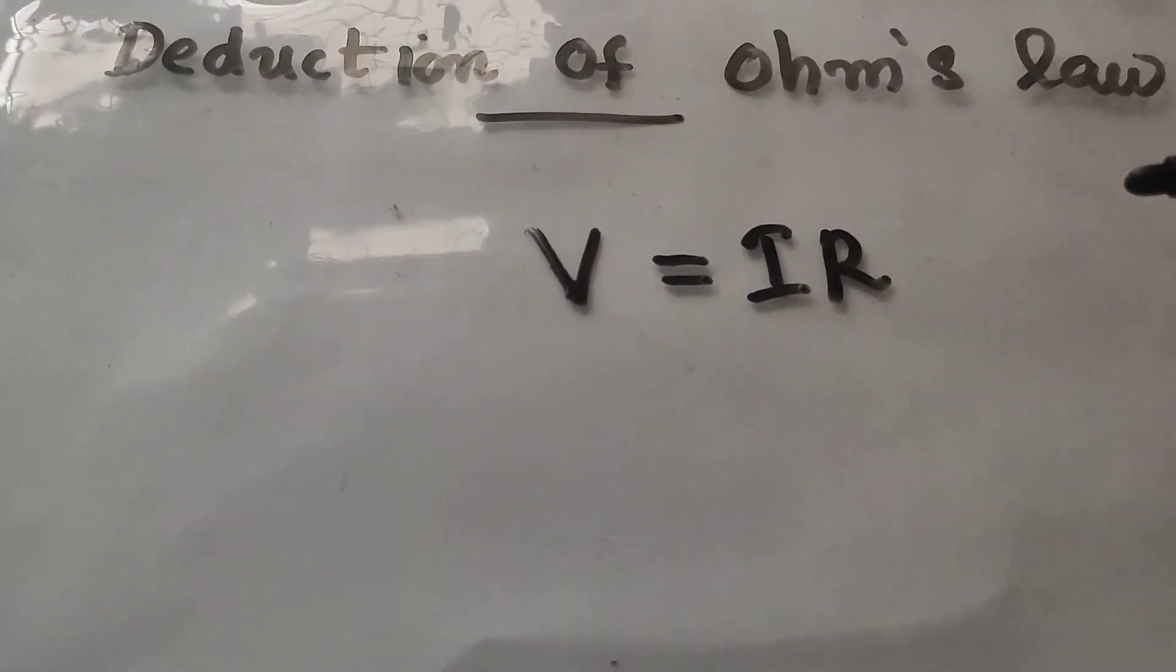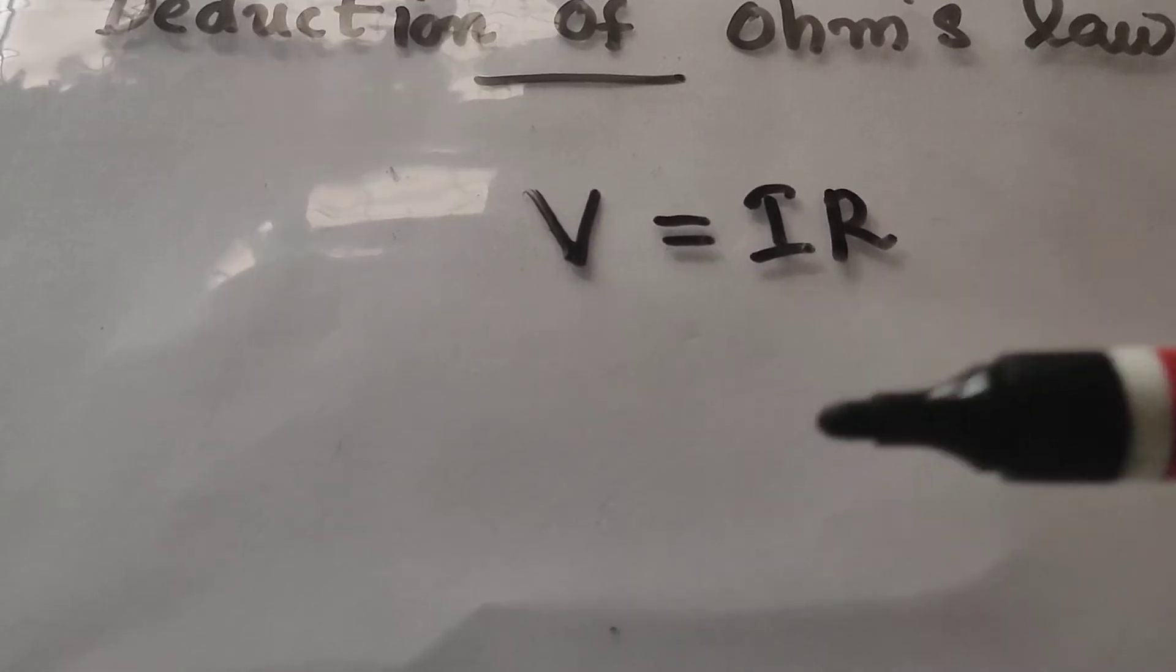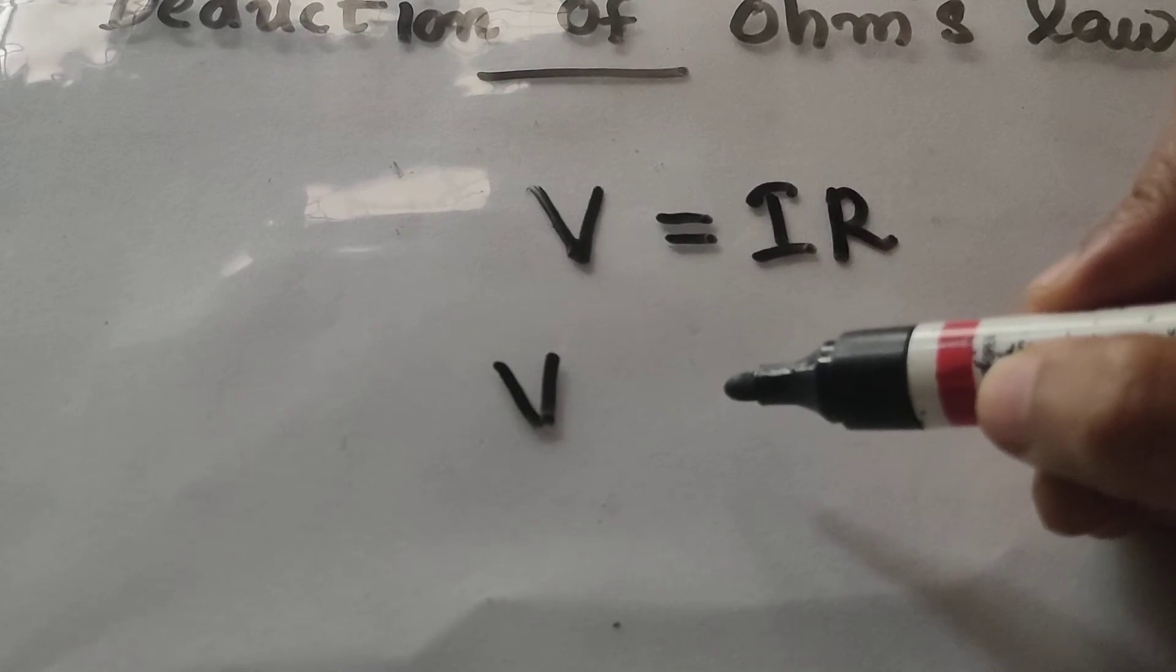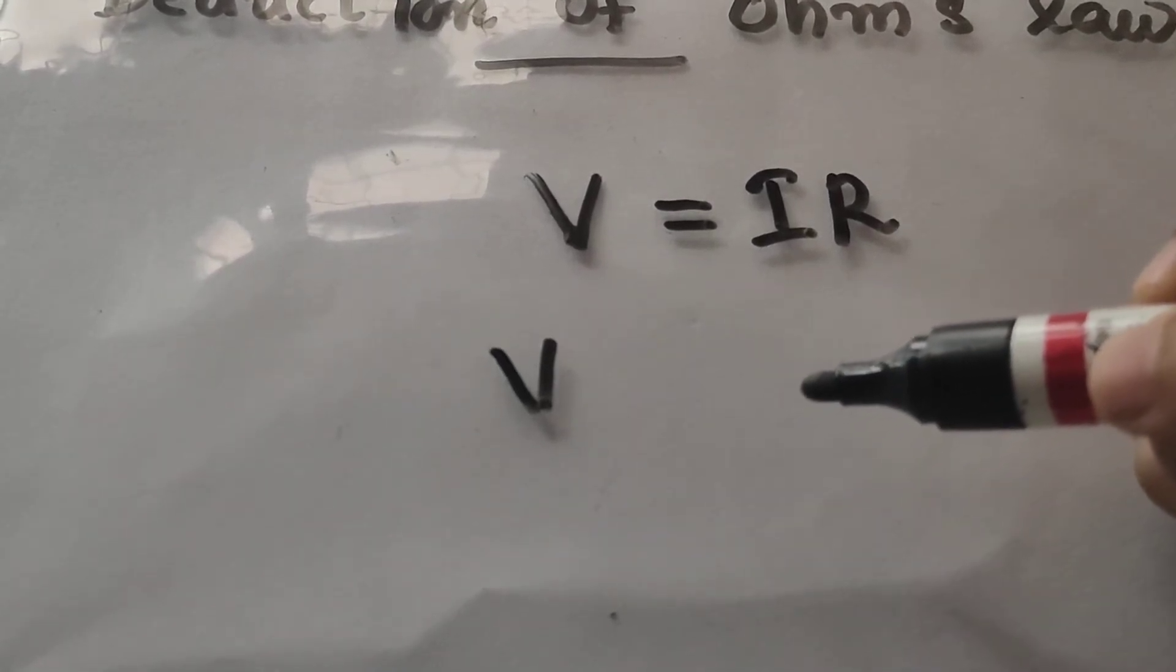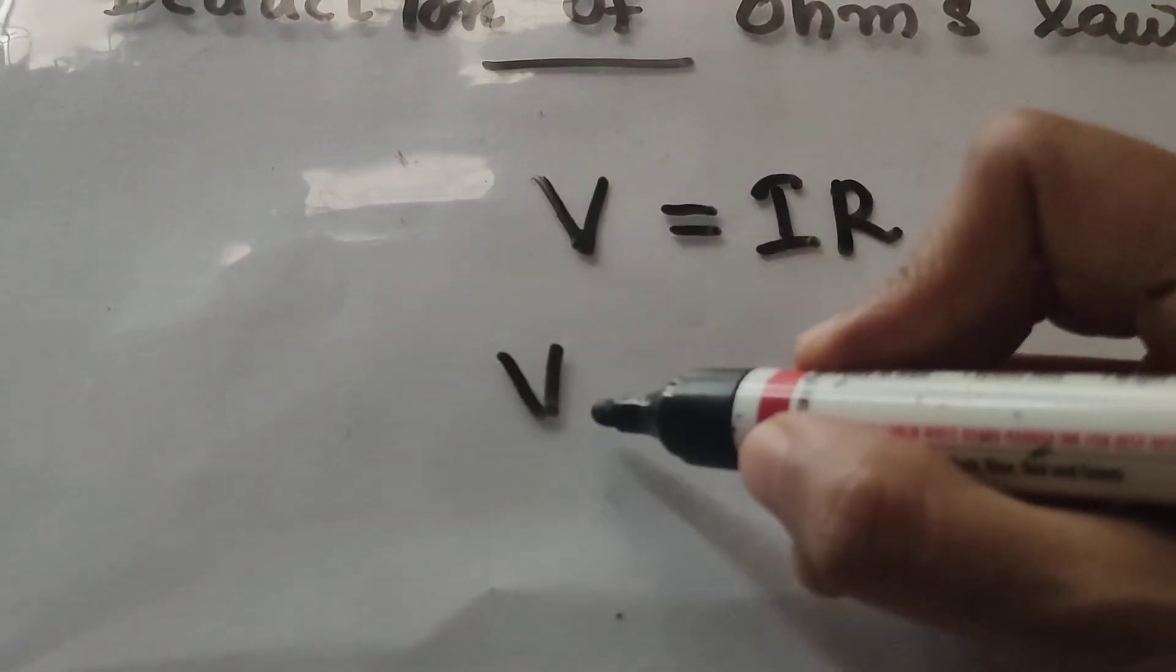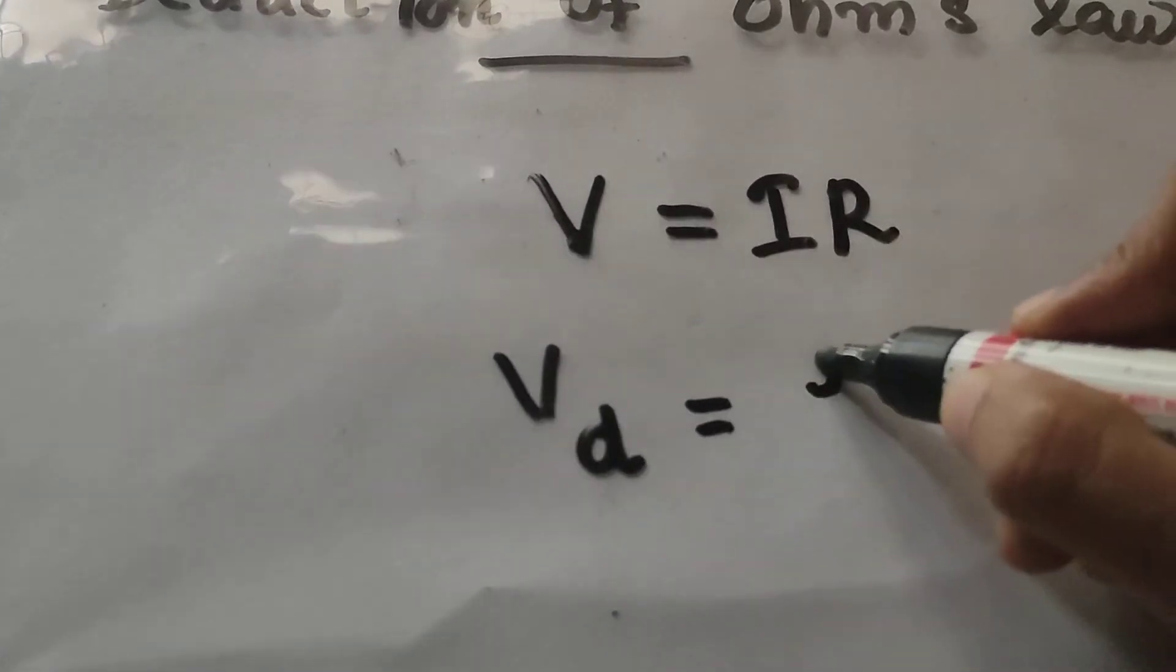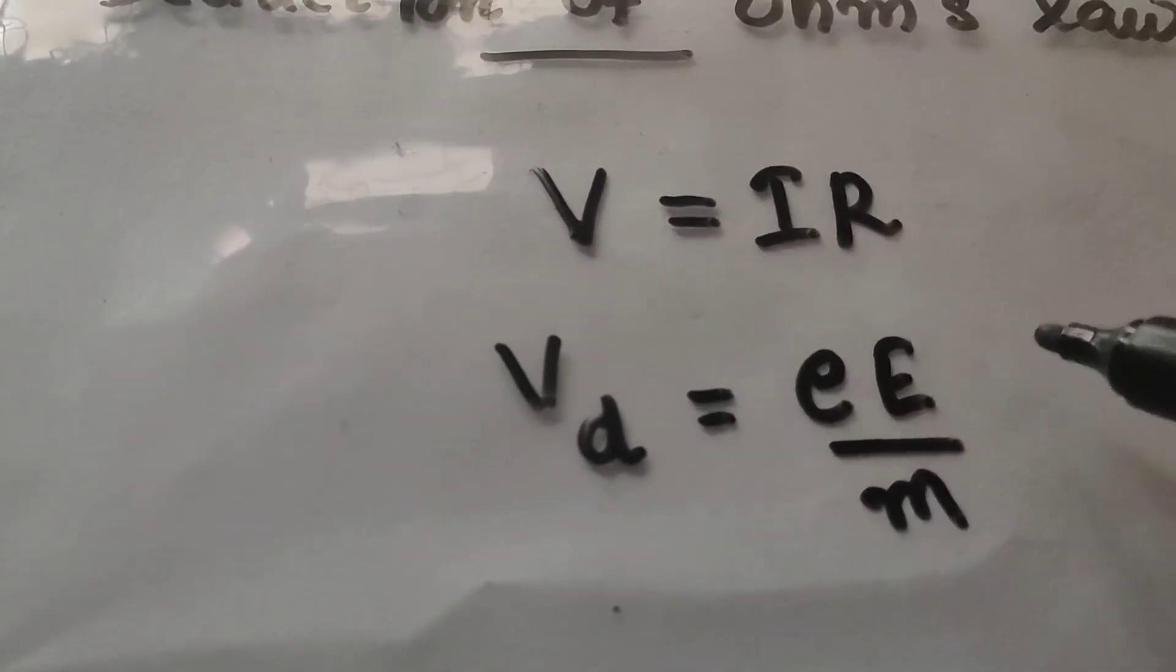We are going to deduce this Ohm's law. For that, when a potential difference V is applied to a conductor, you can see that the free electrons will move with a velocity called drift velocity. And what is the equation for drift velocity?